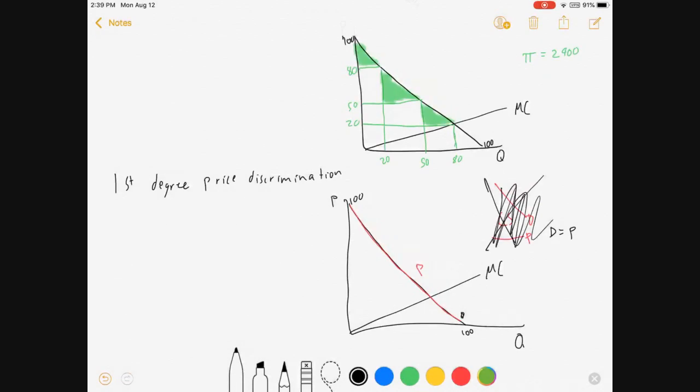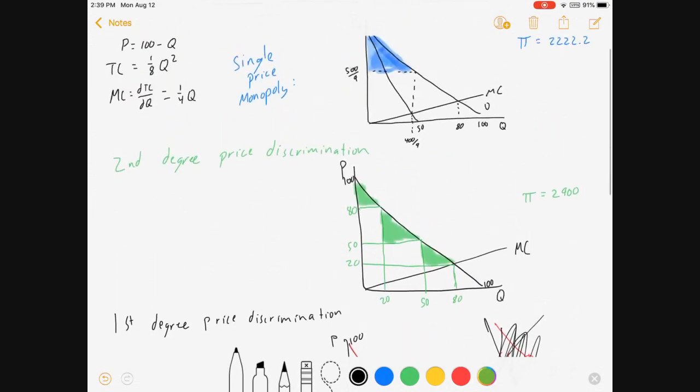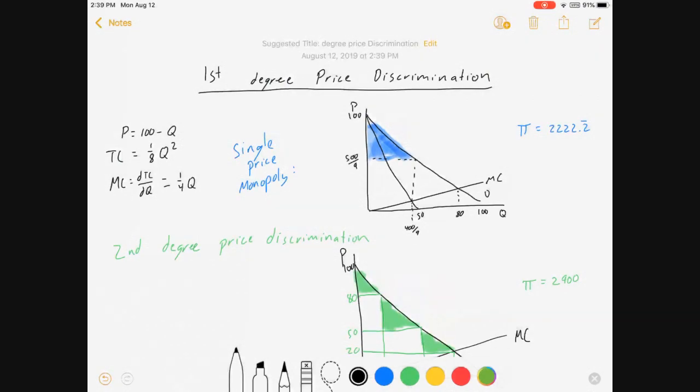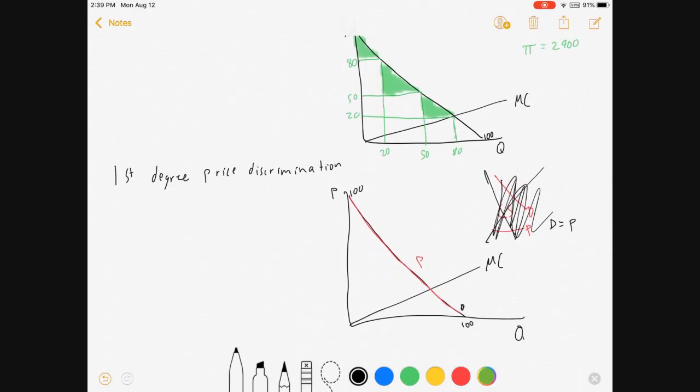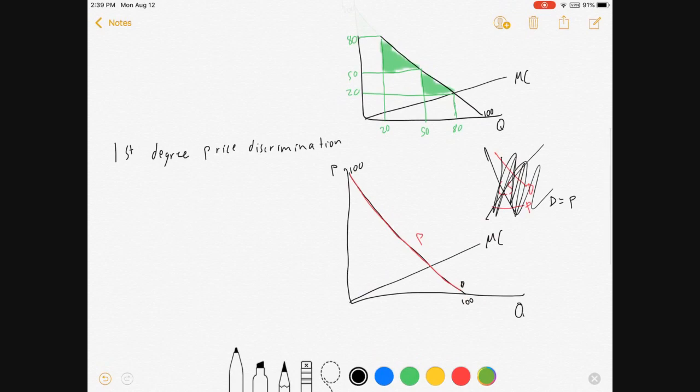But, there are some things we like about it. For one thing, every mutually beneficial transaction will occur. Every time the consumer's willingness to pay on that red line is greater than the marginal cost, the firm will sell it. Unlike with our single price monopoly, and sometimes, maybe not in this example, but in many other examples with second-degree price discrimination, we can have inefficiency. In this one, we like it. It's perfectly efficient. It might not be fair, but that's a different issue.